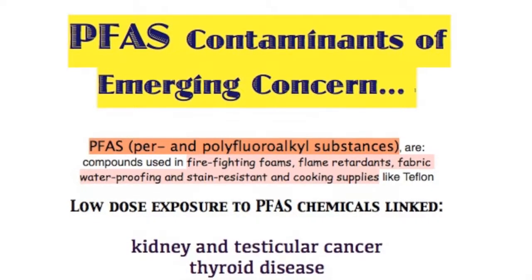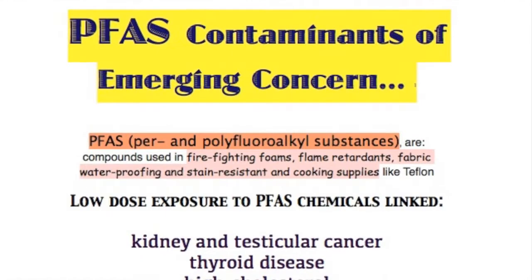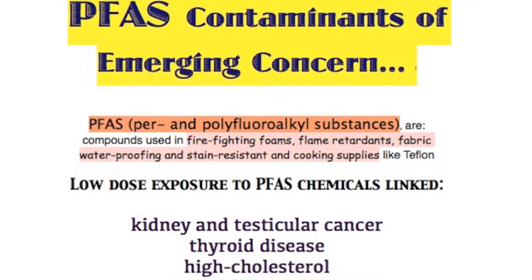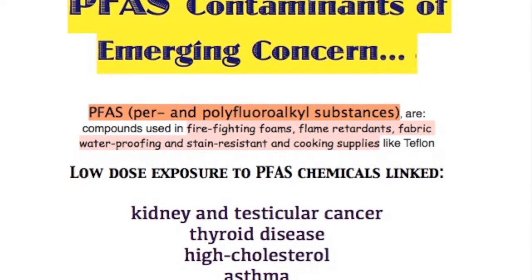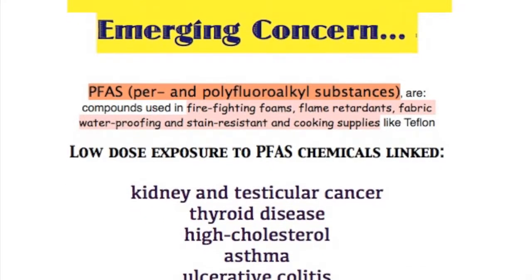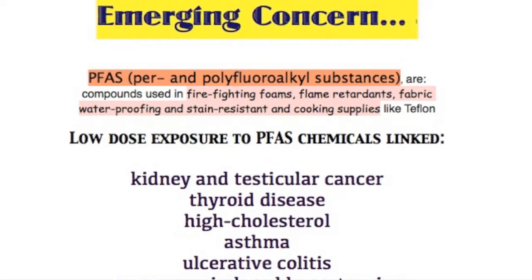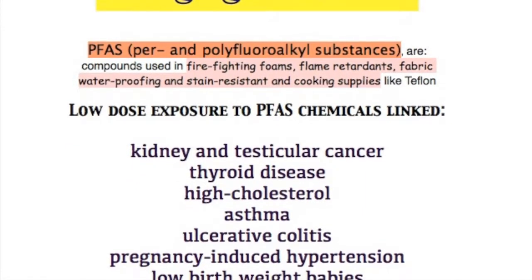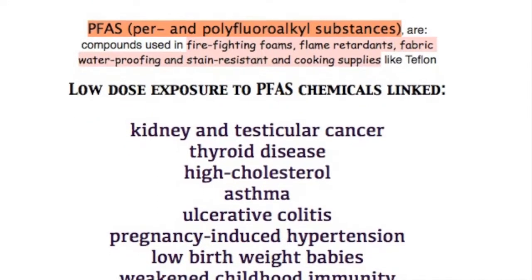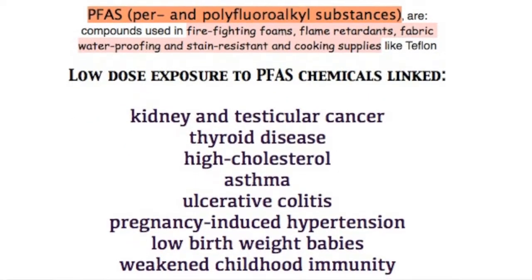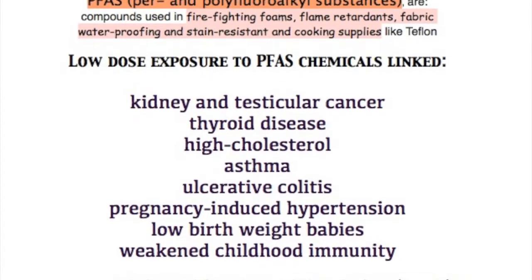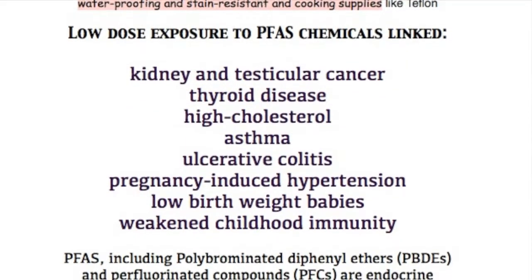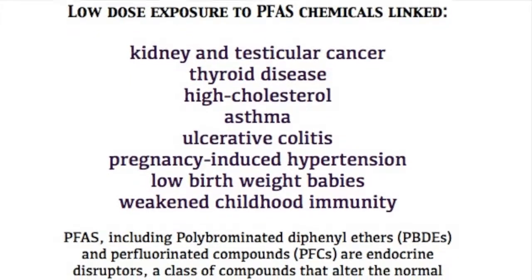Now we're going to talk quickly about PFAS — polyfluoroalkyl substances. This was a chemical compound invented shortly after World War II by 3M. It was invented as a waterproofing agent. 3M carried it for quite a while, and now we use it in waterproofing of clothes, stain-resistant clothing, also in products like Teflon, and in flame-retardant and firefighting foams.